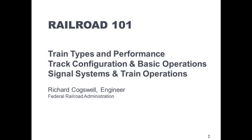Essentially, to be able to plan railroad changes or new infrastructure, people need to understand some basics regarding these topics: train types and performance, track configuration, basic operations, signal systems, and train operations. For all who are working on rail projects, we want to impart some of these fundamentals. Also, when intercity passenger rail service and infrastructure projects are done with federal dollars, FRA wants to ensure the changes are freight and commuter neutral and add capacity to the railroad.